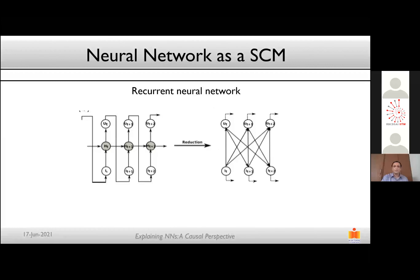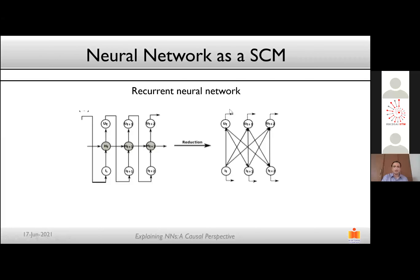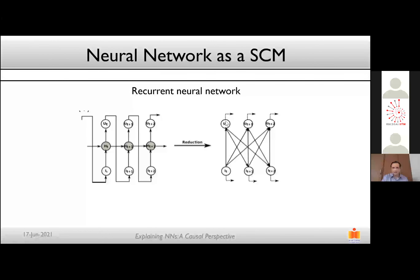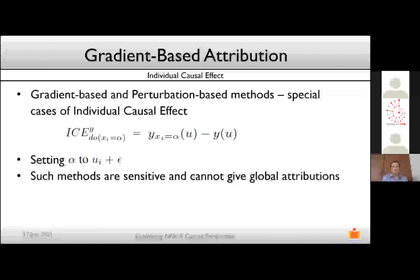For a recurrent neural network, you can similarly marginalize over hidden layers — whether LSTM or simple layers — and get an SCM relating input and output. The key difference from the MLP scenario is that in an RNN there can be a connection from the output at a previous time step to the input at the next time step, which distinguishes the RNN structural causal model from a simple MLP.